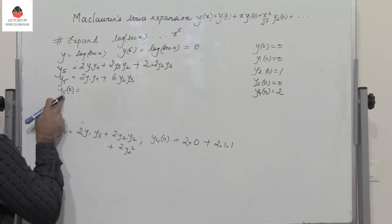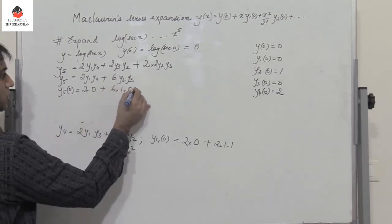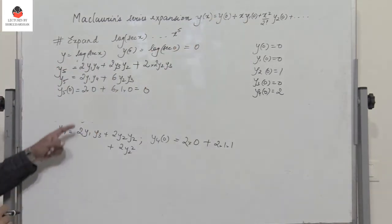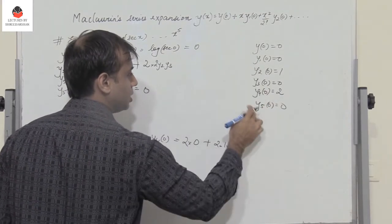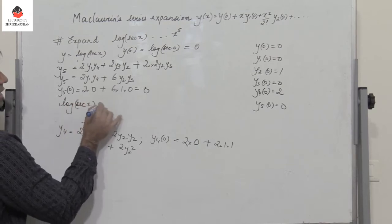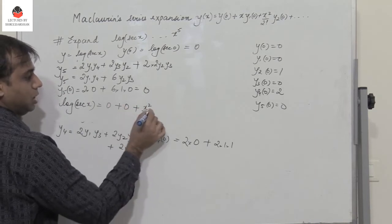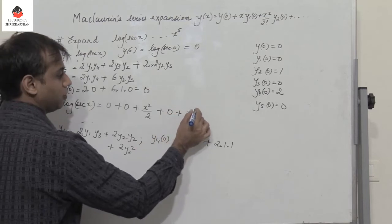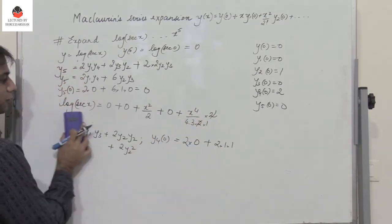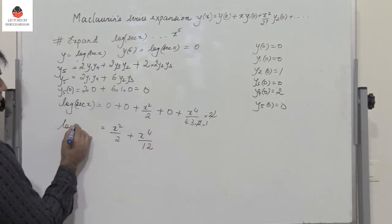Put x = 0: y₅(0) = 2 · y₁(0) · y₄(0) + 6 · y₂(0) · y₃(0) = 0 + 6 · 1 · 0 = 0. Substituting into the Maclaurin expansion: log(sec x) = (x²/2)·1 + (x⁴/4!)·2 = x²/2 + x⁴/12.